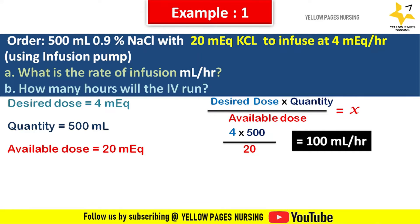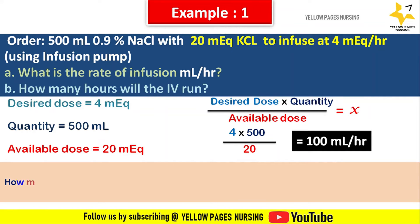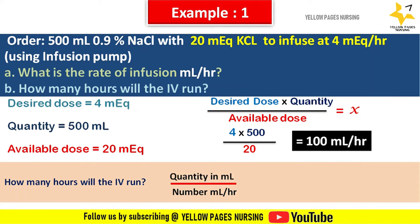We set 100 ml per hour on the infusion pump. How many hours will the IV run? Quantity in ml ÷ ml per hour = 500 ÷ 100 = 5 hours. The IV runs for 5 hours.